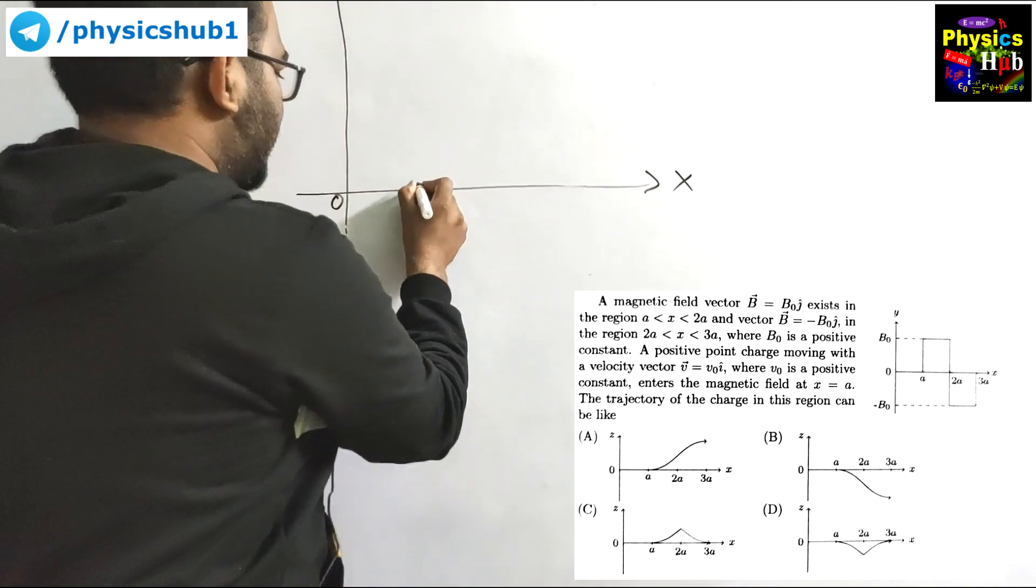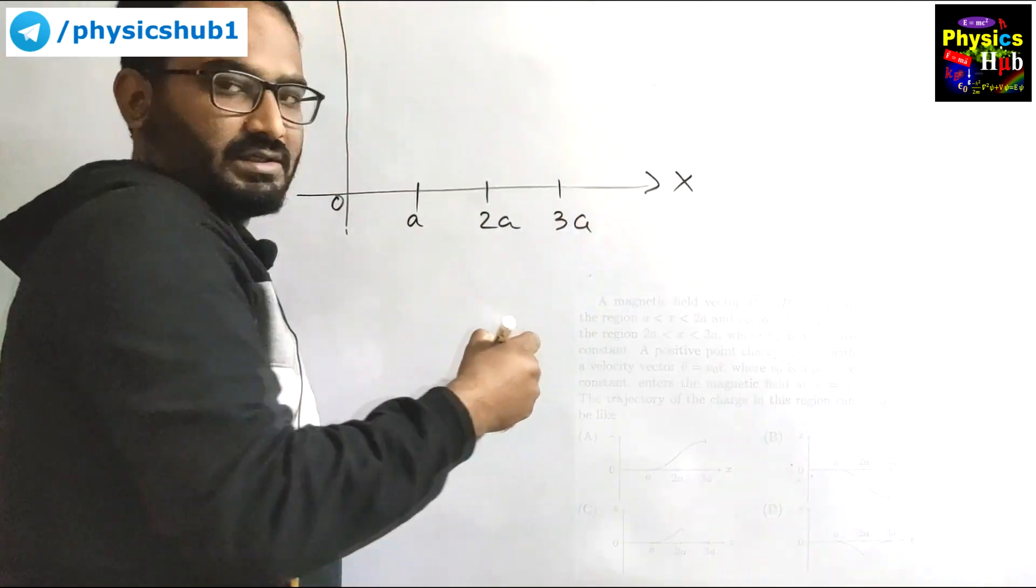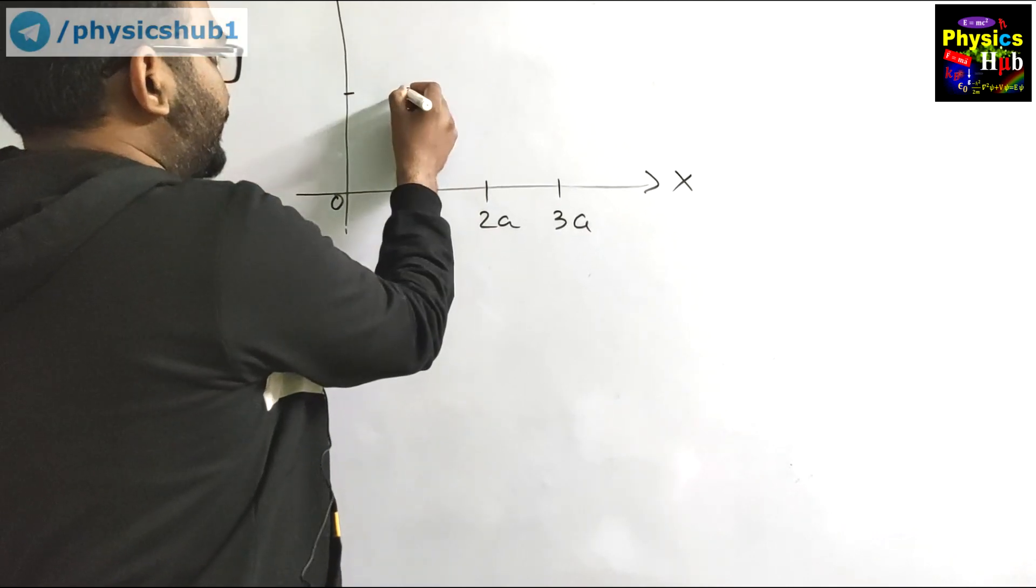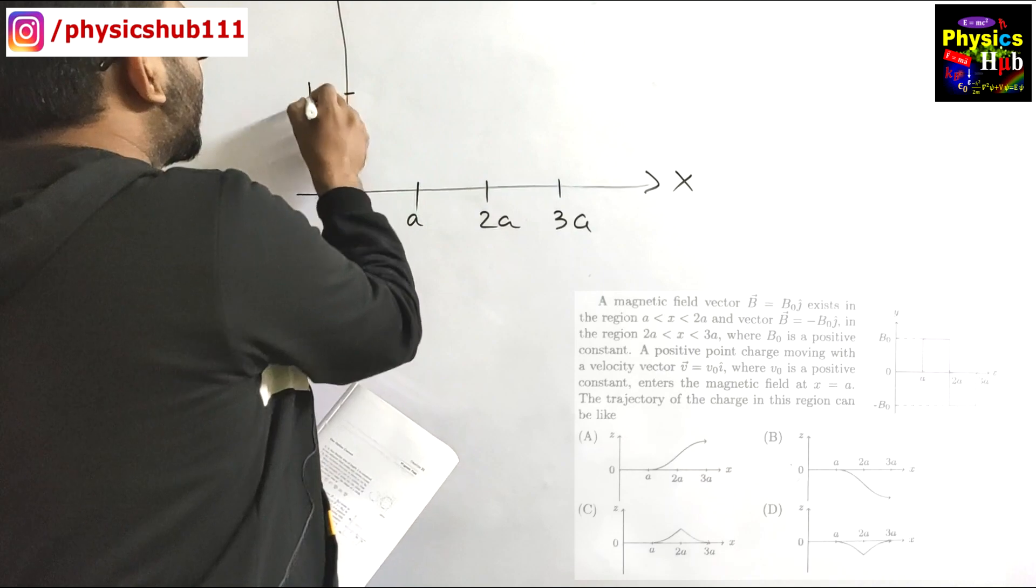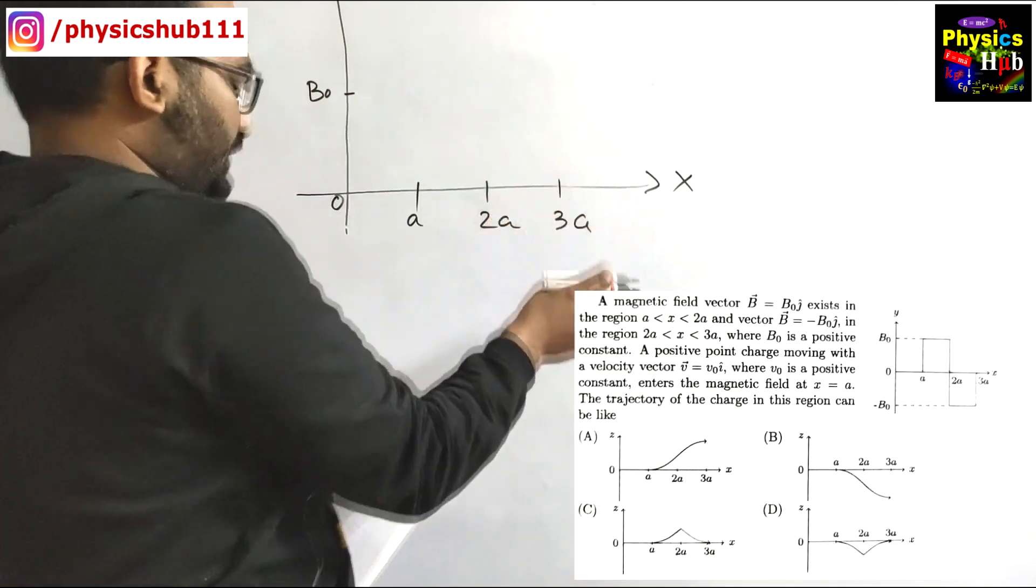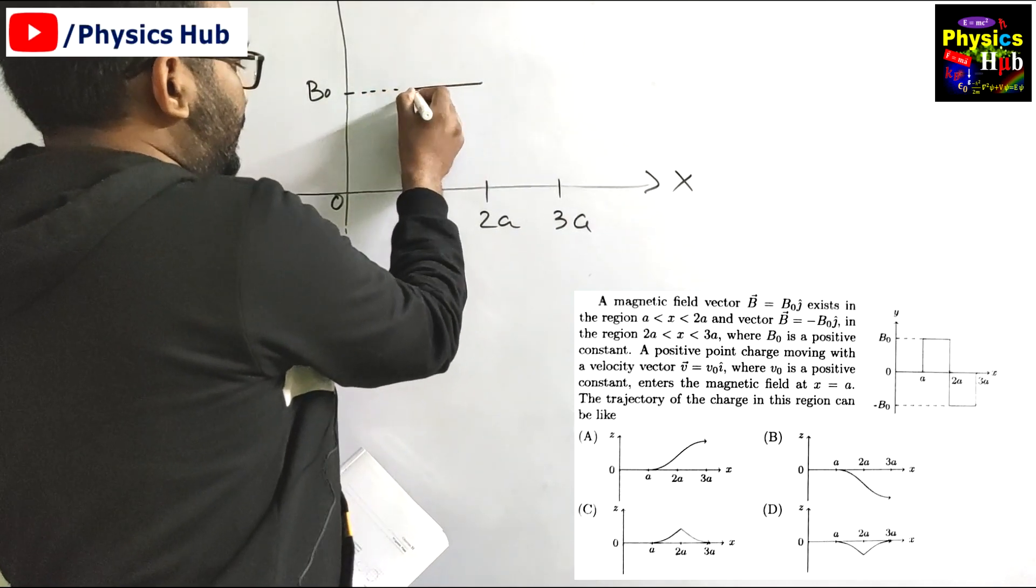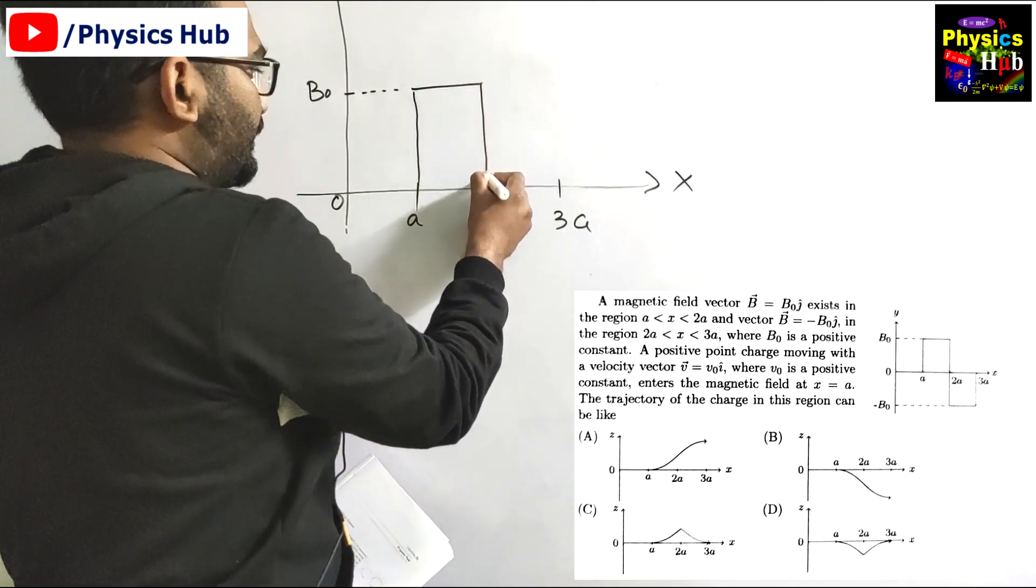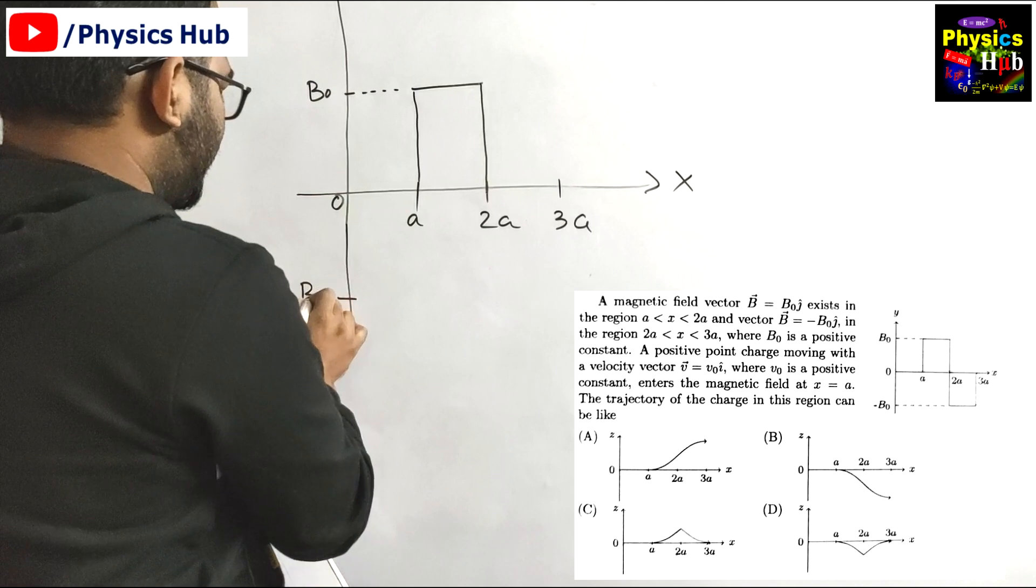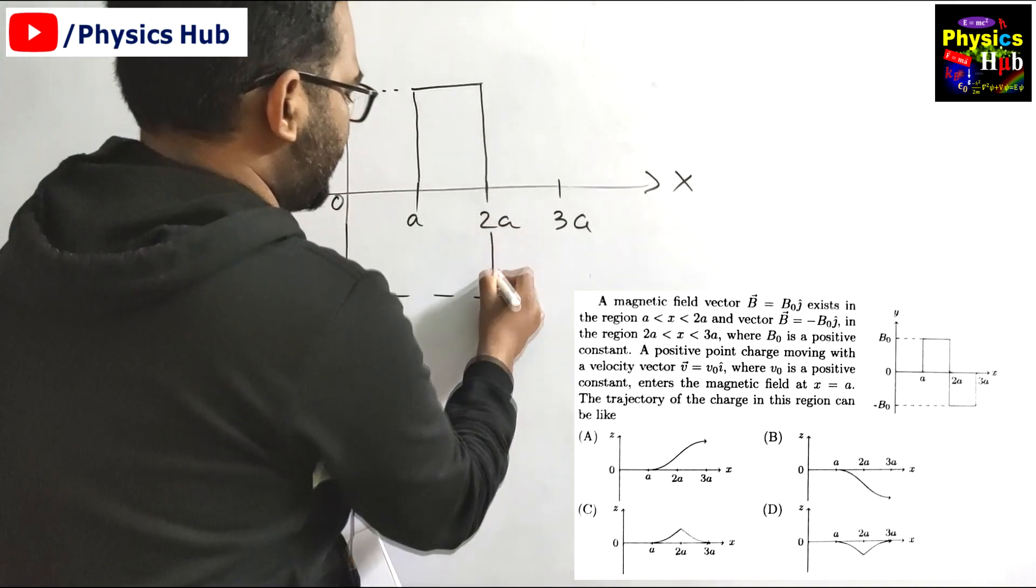It has been divided in this way: a, 2a, 3a - three equal distances. In this region from a to 2a the value of the magnetic field is B naught, and from 2a to 3a the value of the magnetic field is minus B naught. It has become minus B naught in this region, in between 2a to 3a.